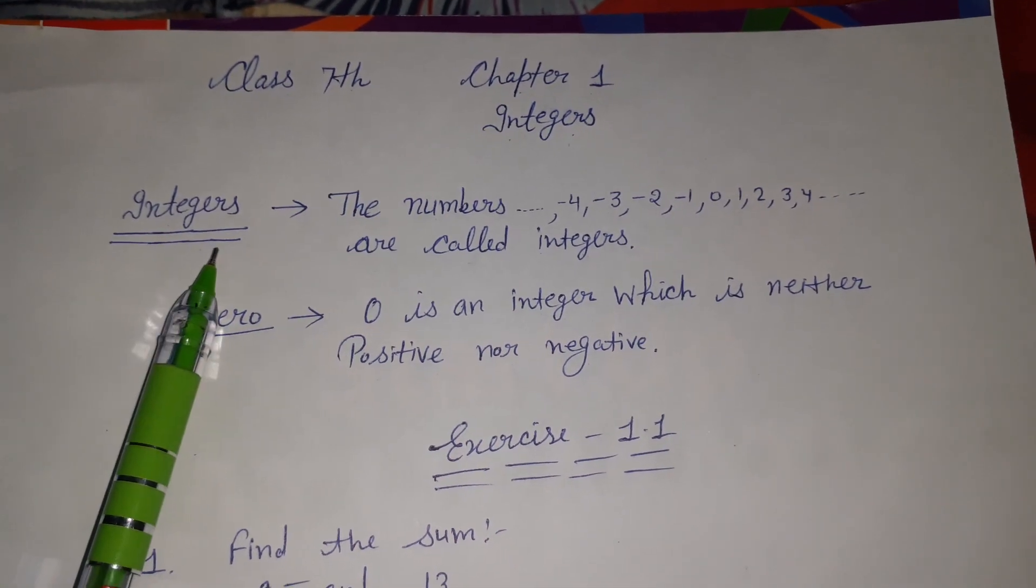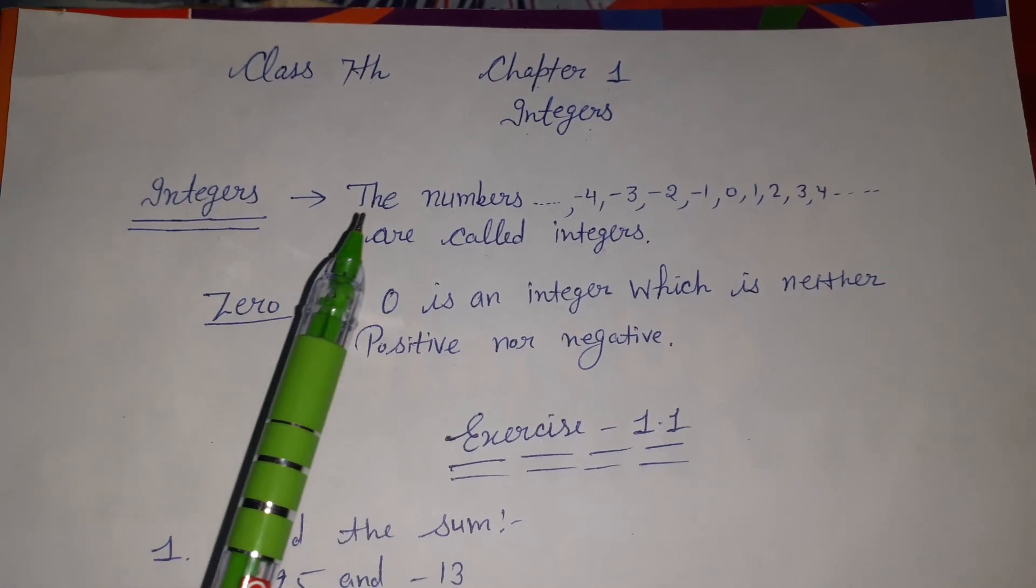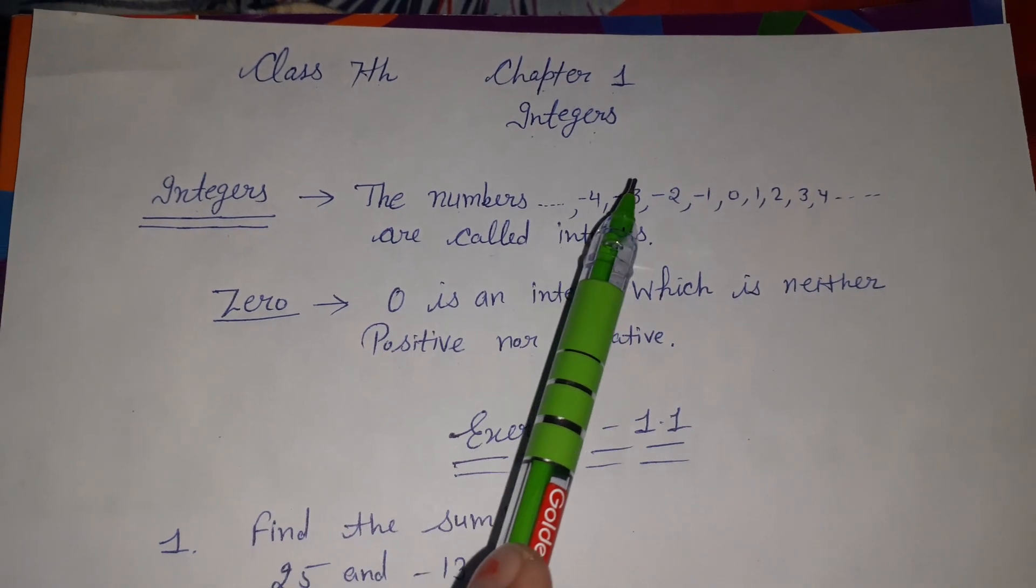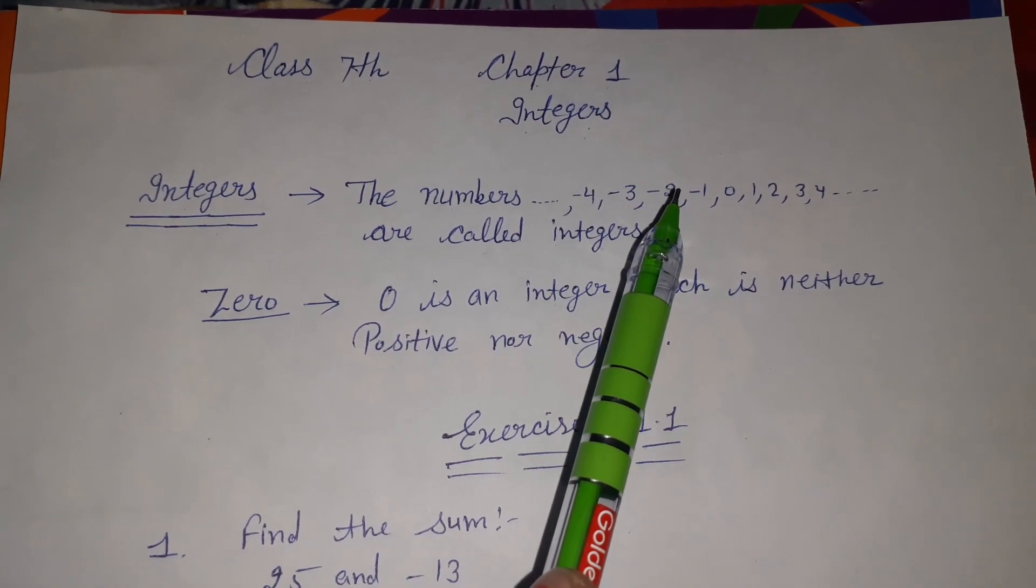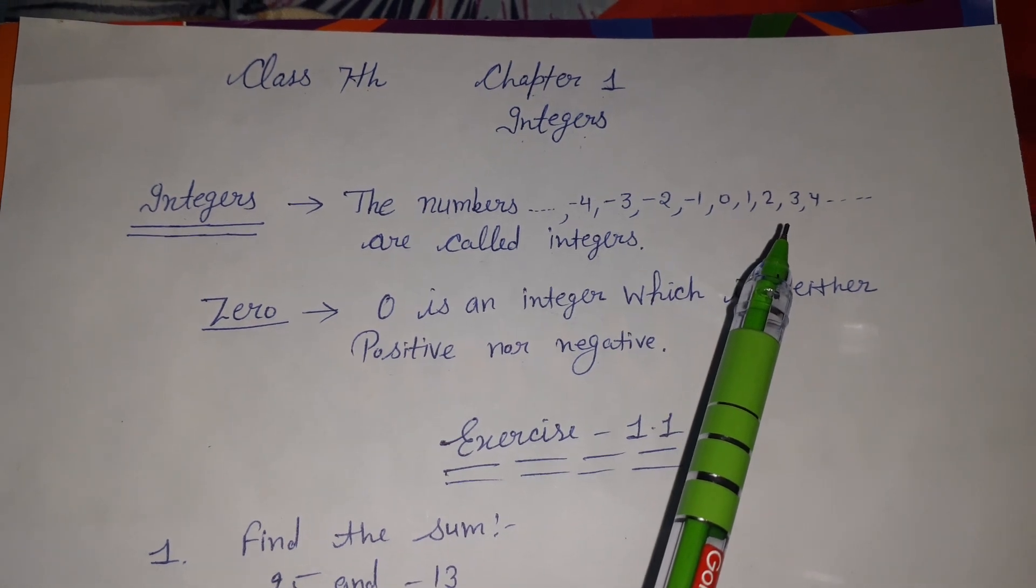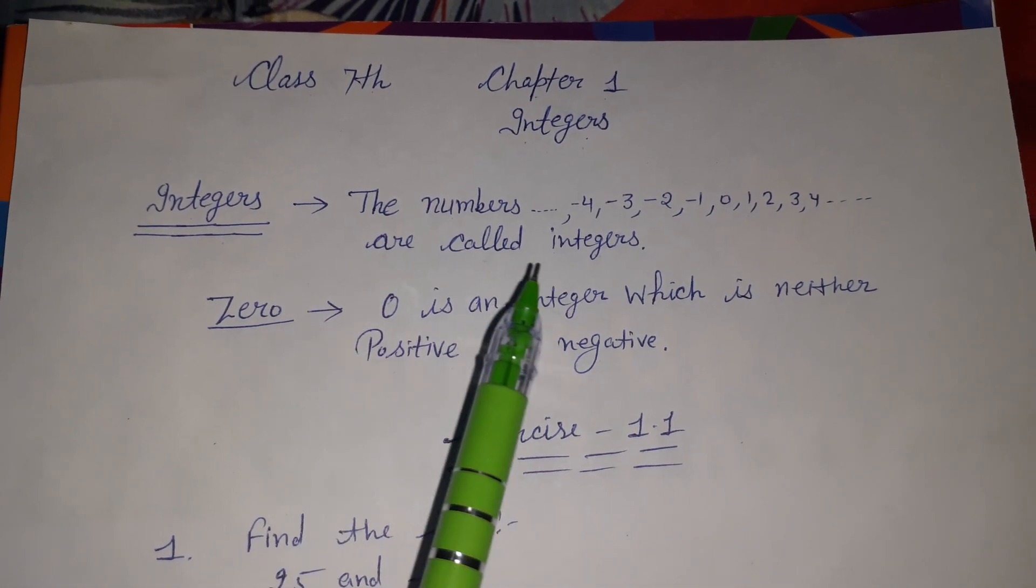What are integers? The numbers are negative and positive: -4, -3, -2, -1, 0, 1, 2, 3, 4. These are called integers.